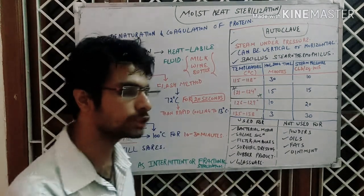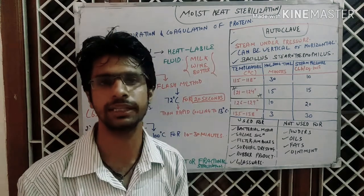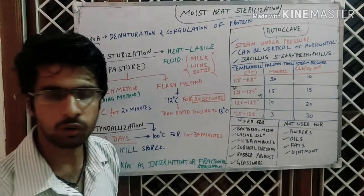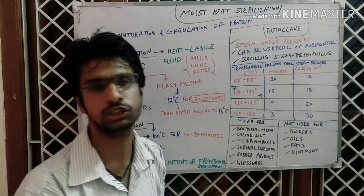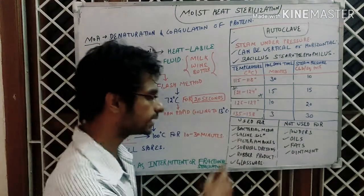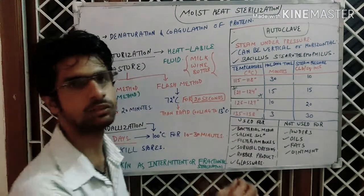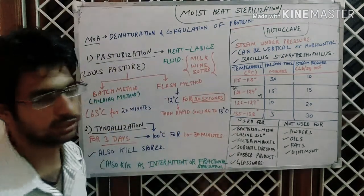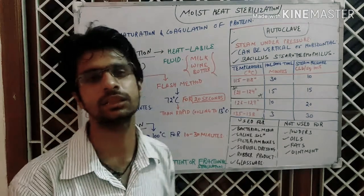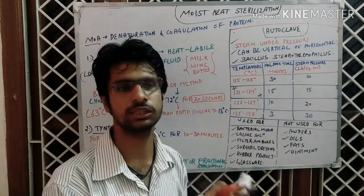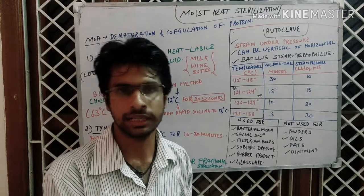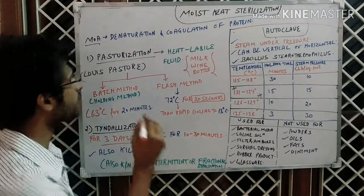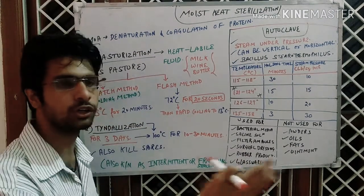If you see the bed sheets in hospitals or any other dressing materials, they get sterilized by steam — moist heat — or what we can say is generally the autoclave. So dressings are the main important thing which get sterilized by moist heat. Let us start with moist heat sterilization. First of all we have to know the mechanism of action, because many times in questions in GPAT, NIPER, and ICMR it is about the mechanism of action.